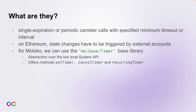Let's talk about the second topic of this talk, which are timers. Timers are single-expiration or periodic canister calls with a specified minimum timeout or interval. That's pretty special because on Ethereum, for example, state changes have to be triggered by external accounts. But on the IC, with the use of timers, state changes can actually be triggered by the smart contract itself. For Motoko, there's the timer base library available, which is an abstraction over the low-level system API. It offers three methods: set timer, cancel timer, and recurring timer — used to set a one-off timer, cancel a timer, or set a recurring timer.